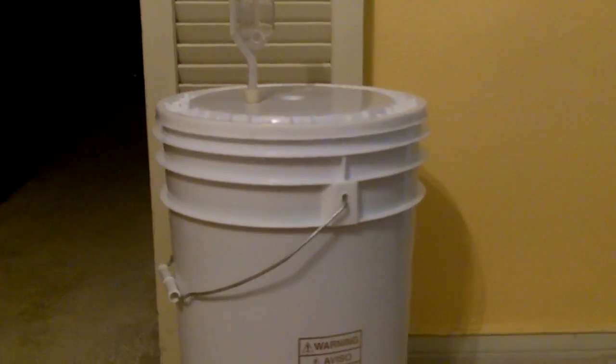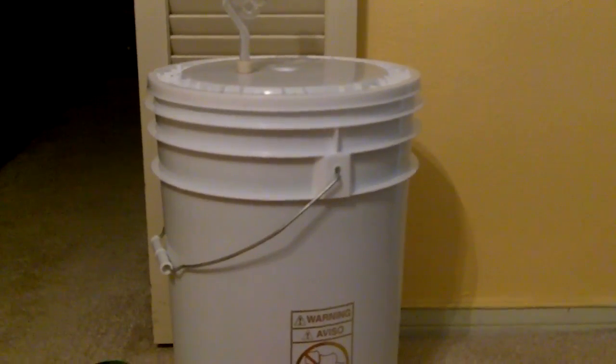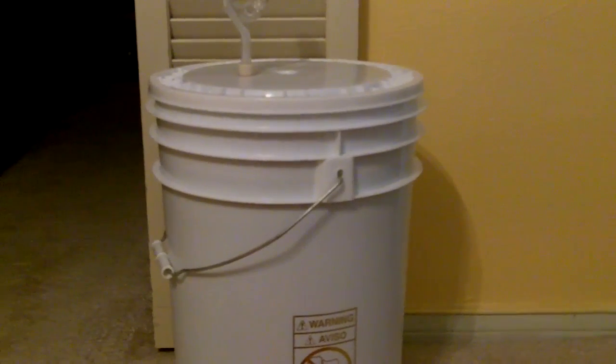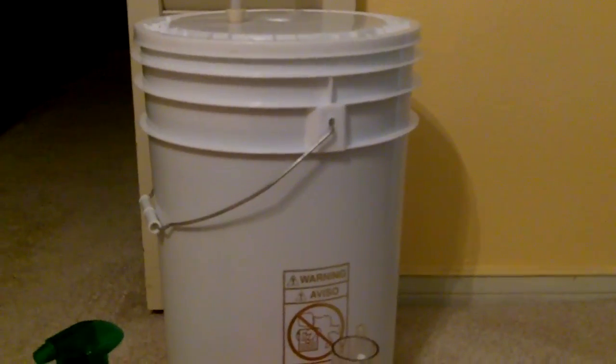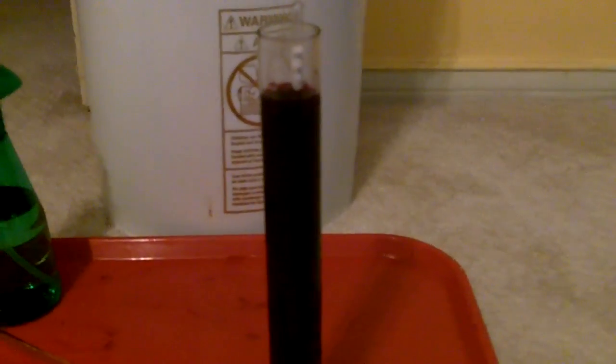The reason for that is that what's happening inside that bucket is that the yeast is turning the sugar that's in the grape juice, basically turning it into alcohol. Now, that alcohol, if you were to take straight alcohol, like rubbing alcohol or something, and you were to put that hydrometer into that, it would sink to the bottom.